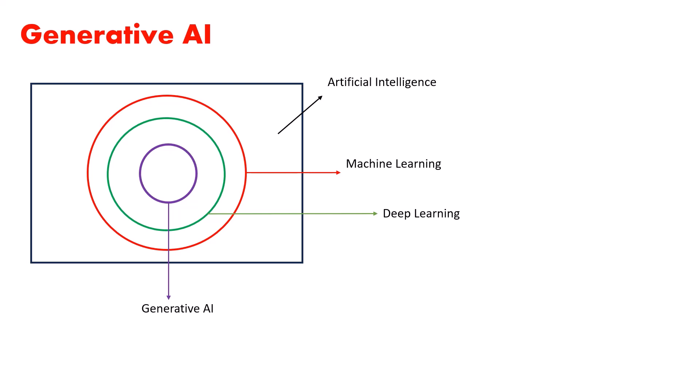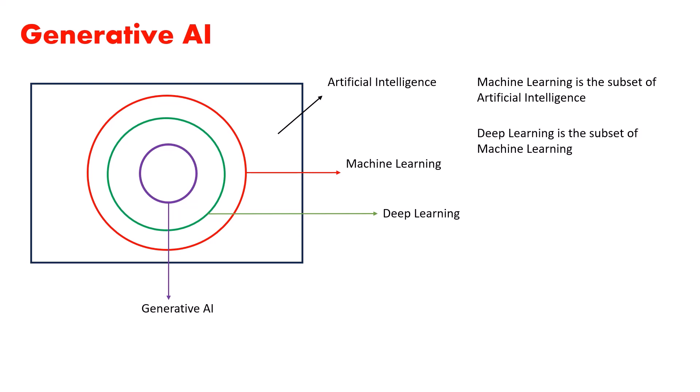ChatGPT is a large language model based on generative AI techniques. Looking at the diagram, you can see that artificial intelligence is the broadest field, machine learning is a subset of AI, deep learning is a subset of machine learning, and generative AI is a subset of deep learning, shown by the green line.